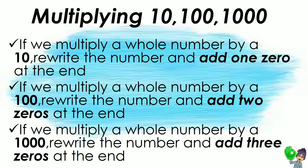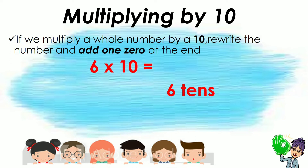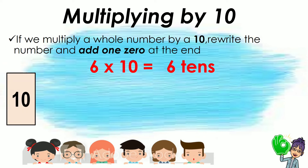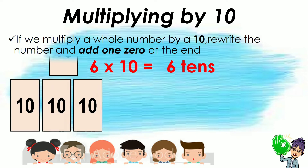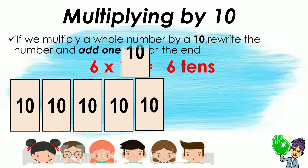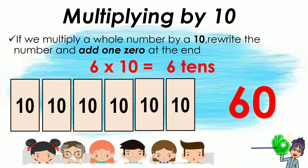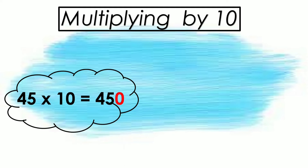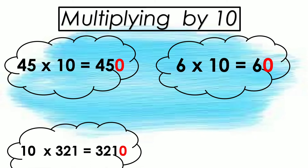Let's go through each multiplier one by one. For multiplying by 10: 6 times 10 equals 60. As you can see, in 60 we have 1 zero. So in multiplying numbers by 10, just copy the number and add 1 zero at the end.